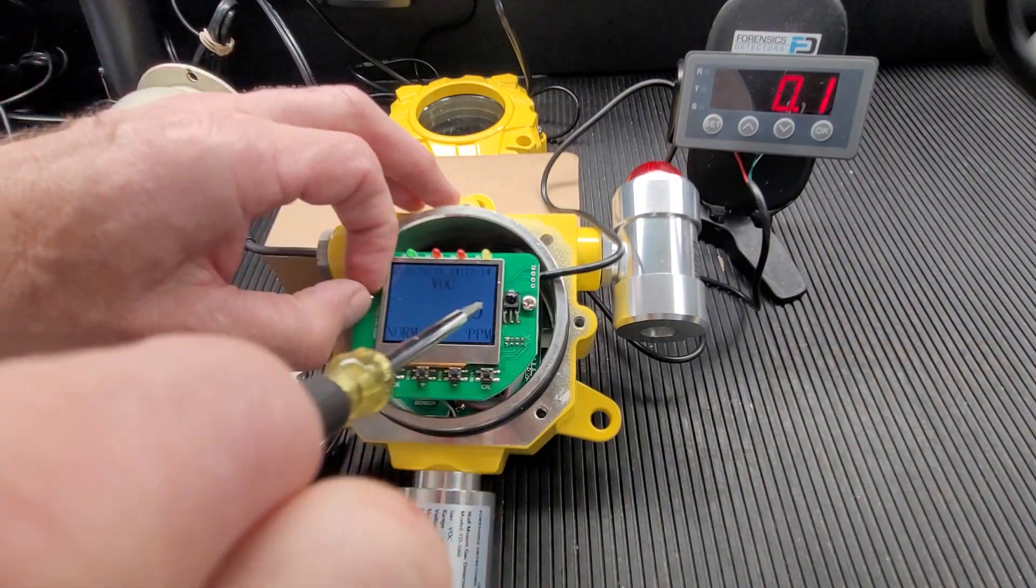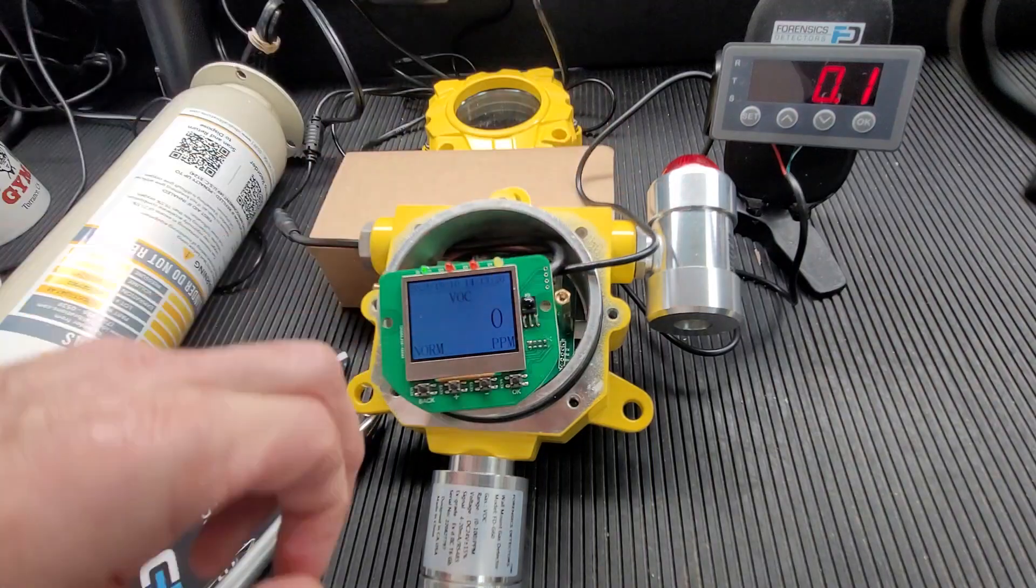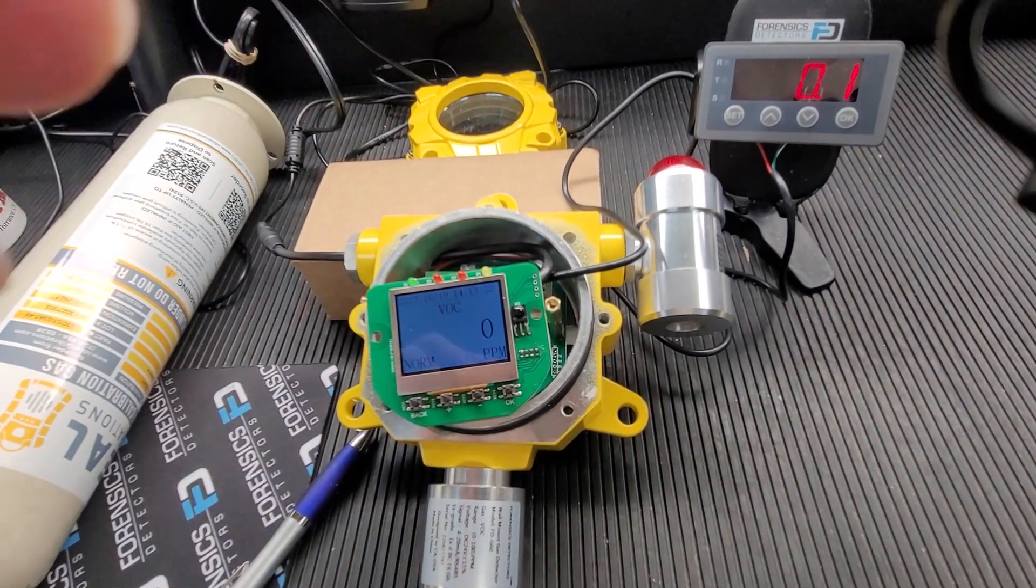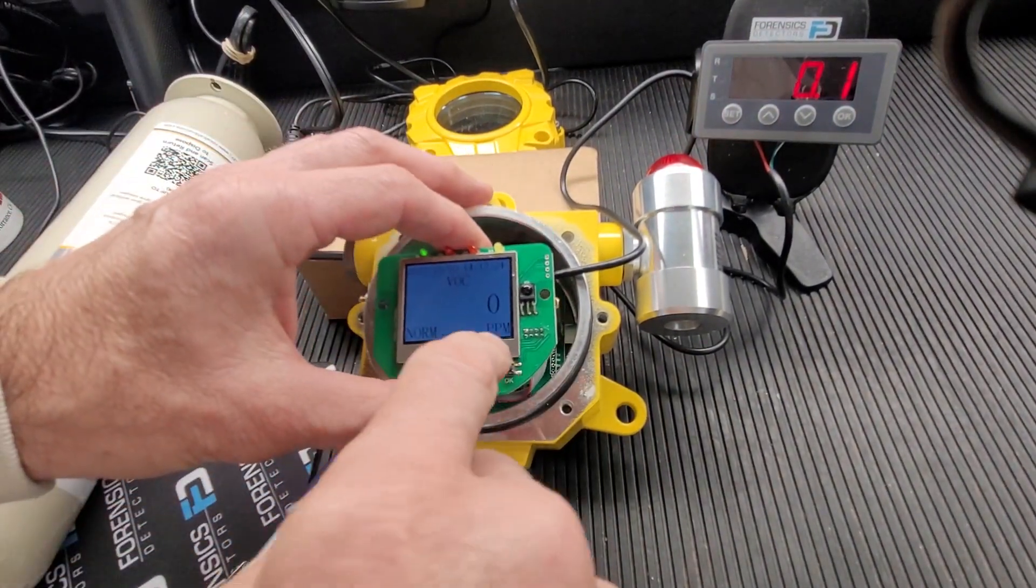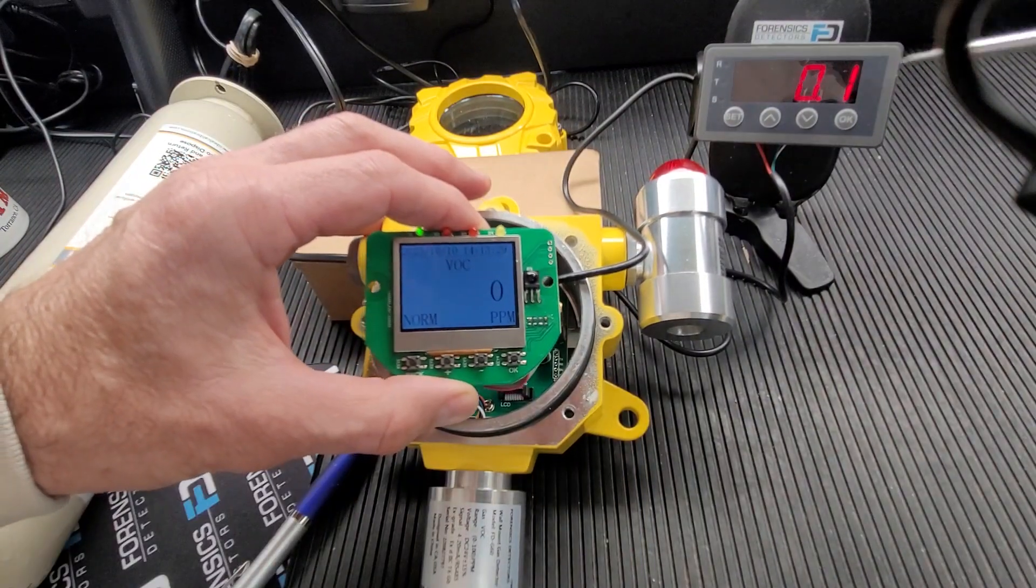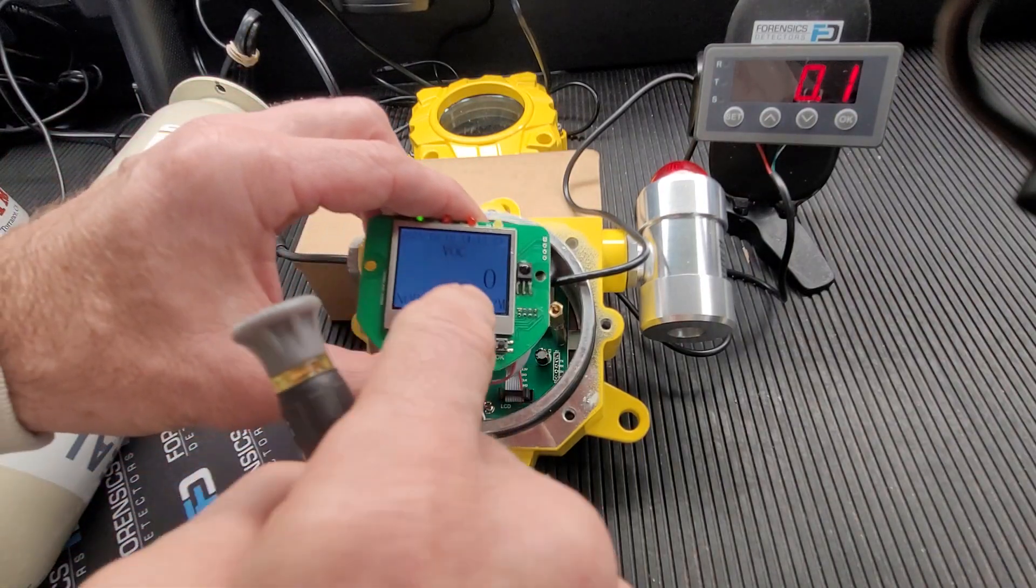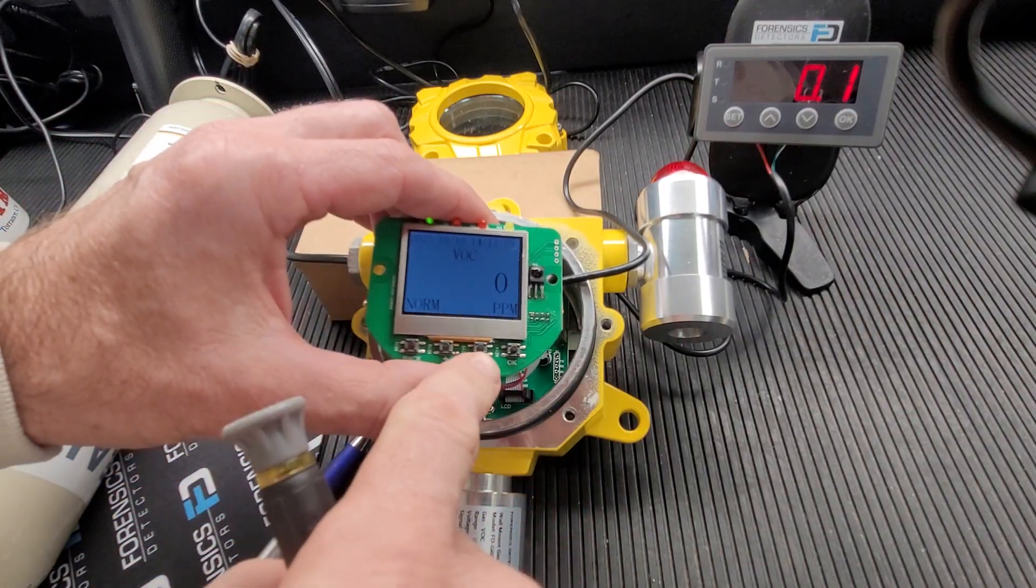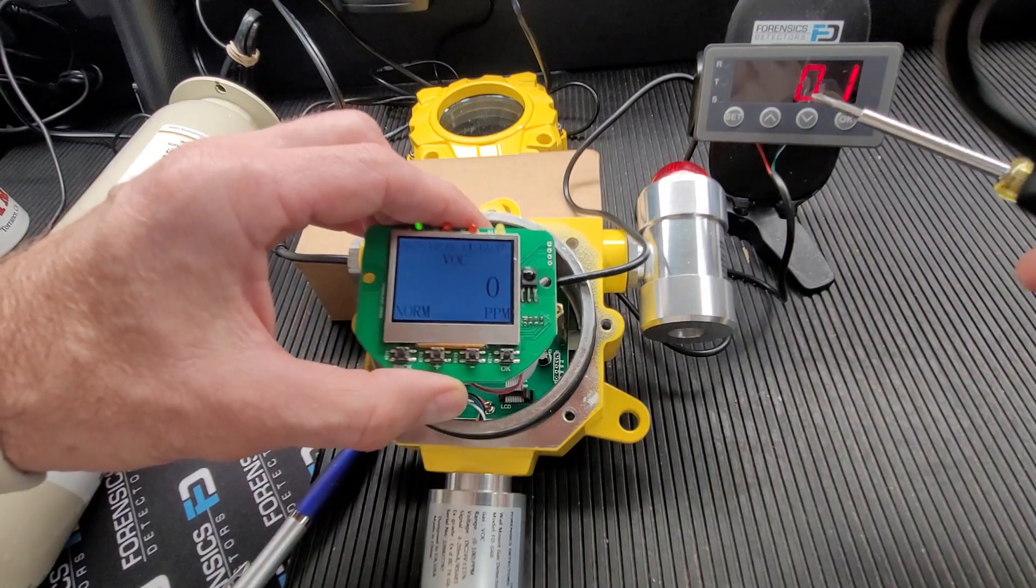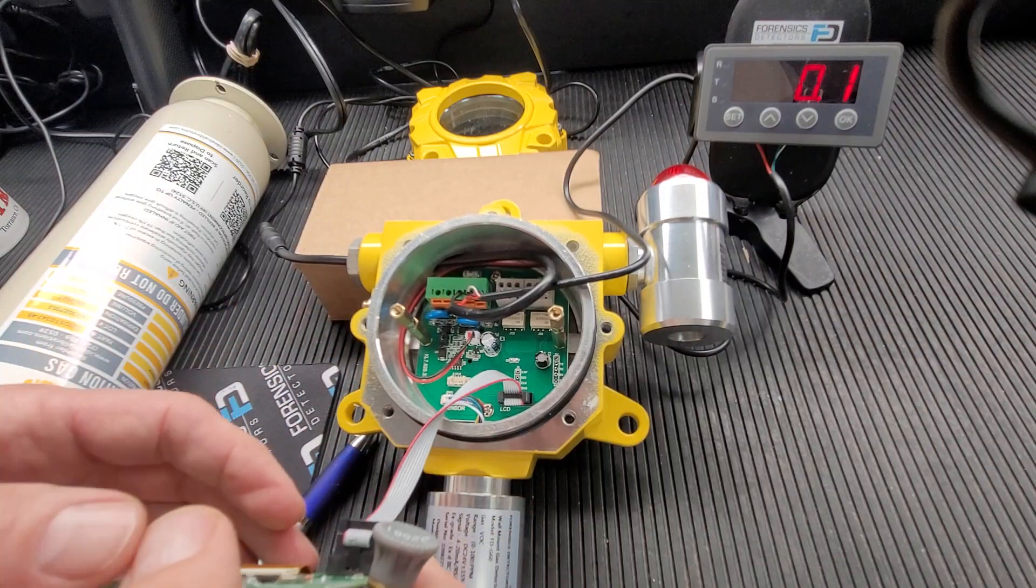Now, there isn't much setup from the unit itself. 4 milliamps is representative of zero, or the minimum value of your unit. For example, here we have the VOC zero, so 4 milliamps going out represents zero on the display. This is 100 ppm max, so that means 20 milliamp will be max on the unit. So that's the way it works.